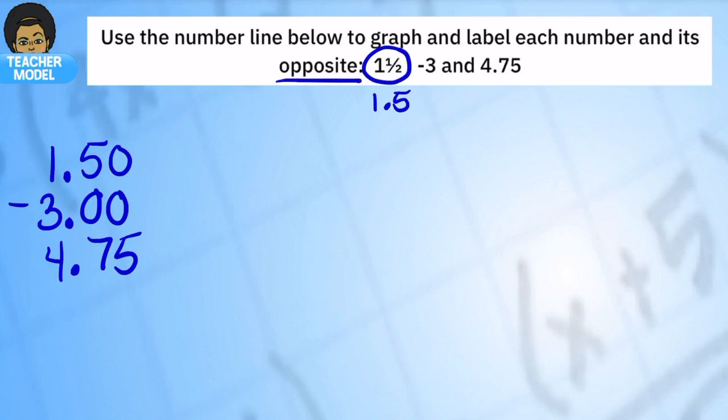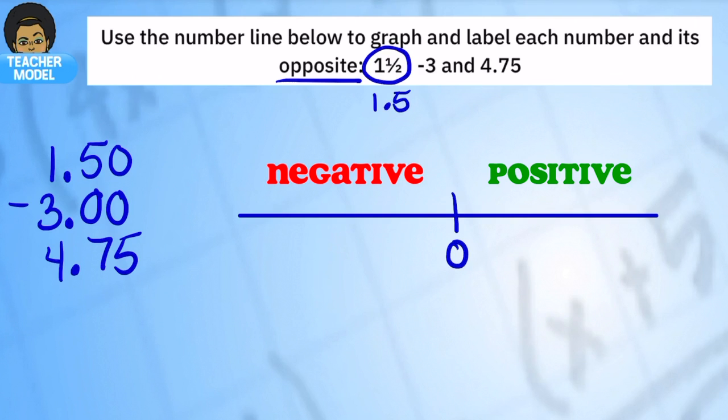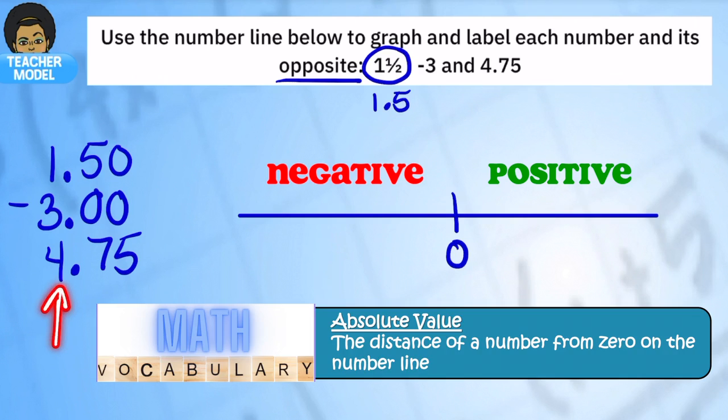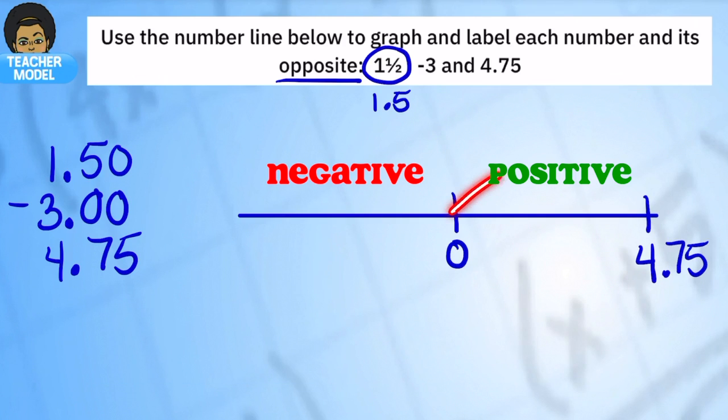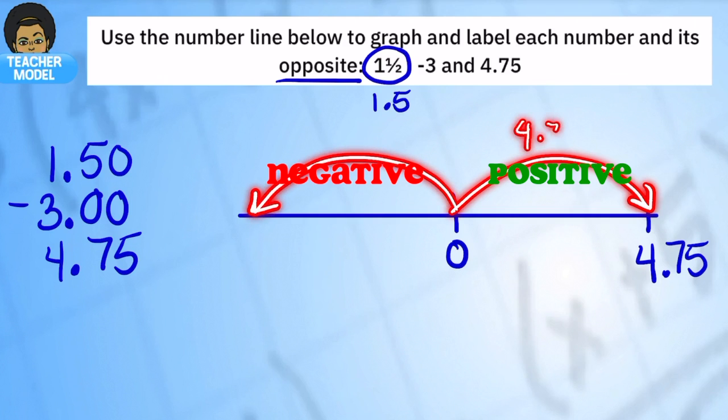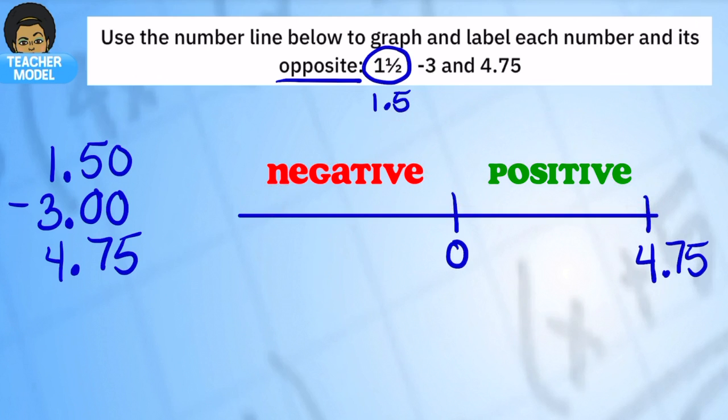And when I start my number line I want to look for the number that is furthest from zero, which one has the greatest absolute value. So for that I'm going to look here at the ones place and the largest digit is 4, so I know that 4 is going to be the furthest away. So 4.75 is the furthest away from zero and its opposite is also going to be 4.75 away just in the opposite direction, so I'm going to put negative 4.75.